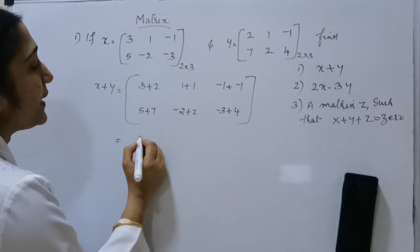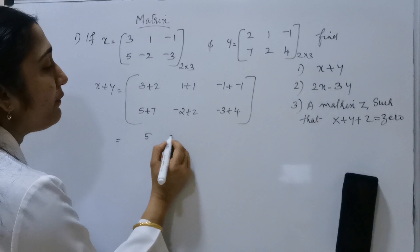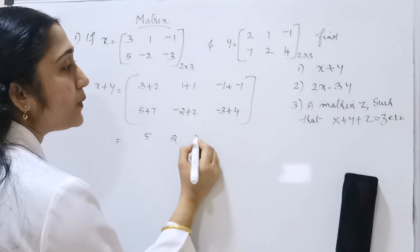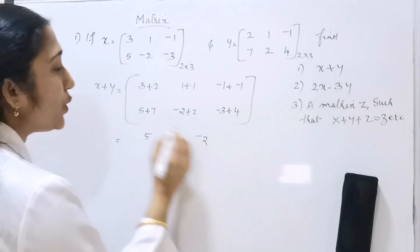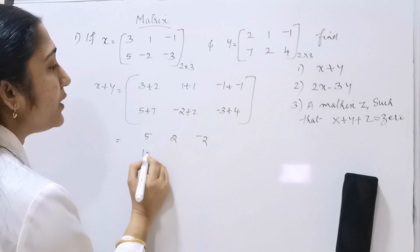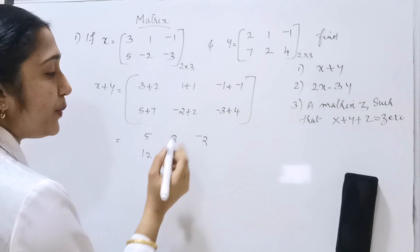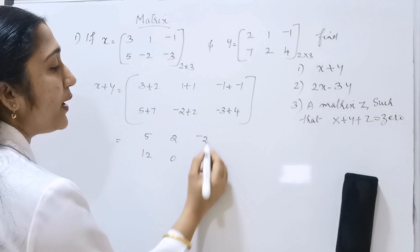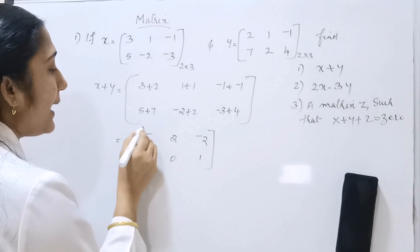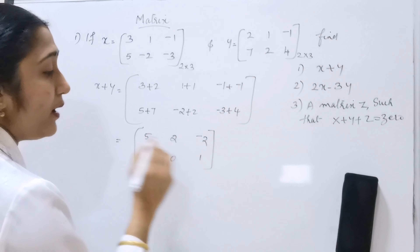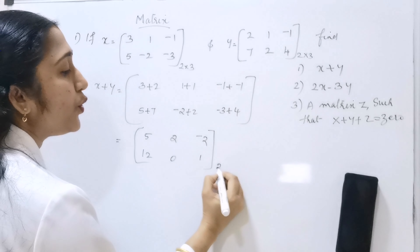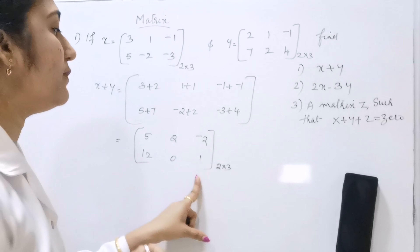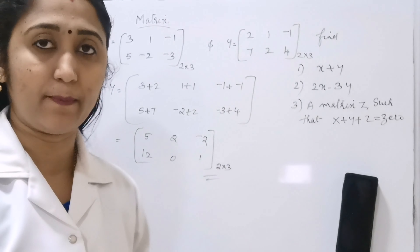So the result: 3 plus 2 is 5, 1 plus 1 is 2, minus 1 plus minus 1 is minus 2. Then 5 plus 7 is 12, minus 2 plus 2 is 0, and minus 3 plus 4 is 1. So X plus Y equals the 2 by 3 matrix [5, 2, -2; 12, 0, 1]. This is the first problem's answer.